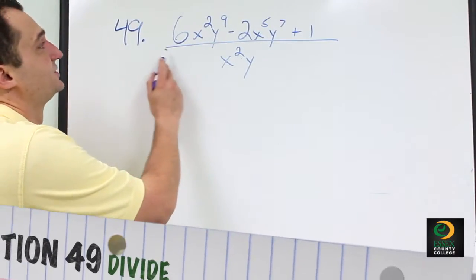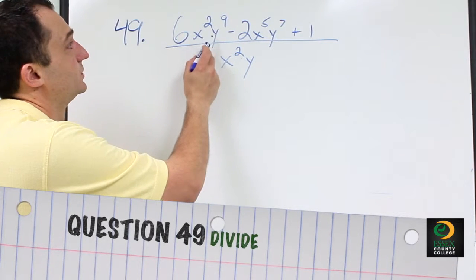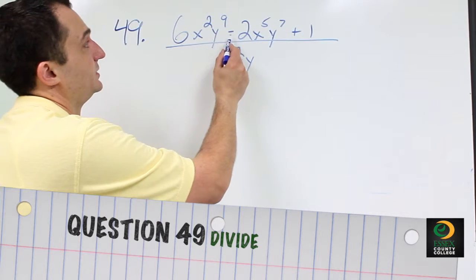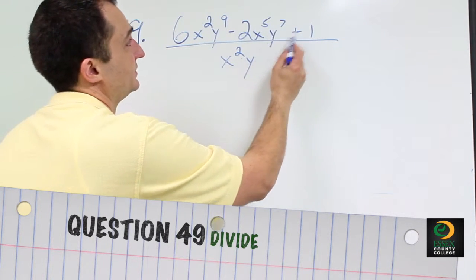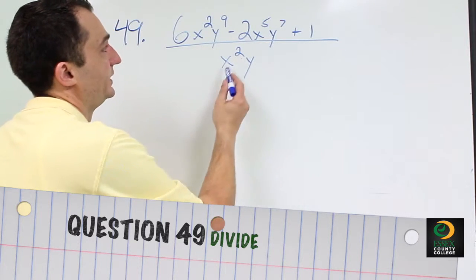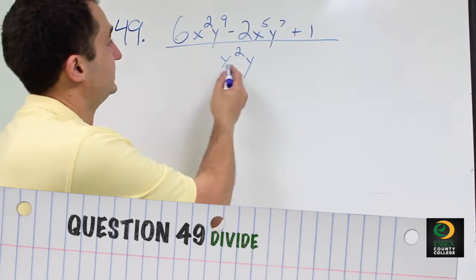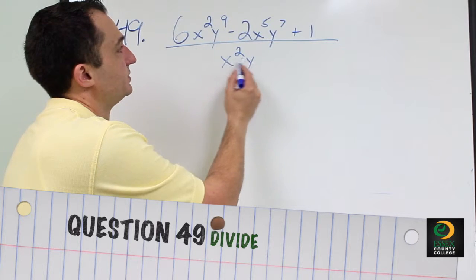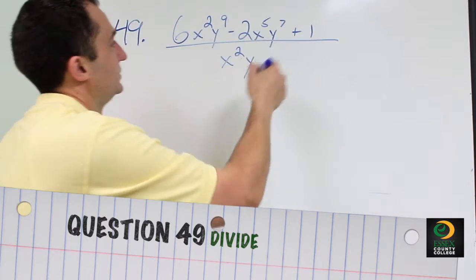Problem number 49 asks us to divide 6x squared y to the 9th minus 2x to the 5th y to the 7th plus 1, and divide all that by x squared y. Since the denominator is multiplied together, we can separate the terms.